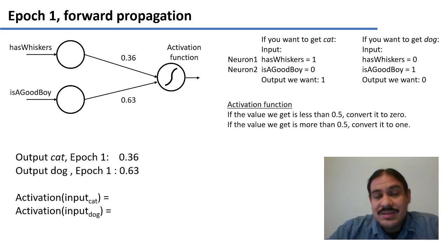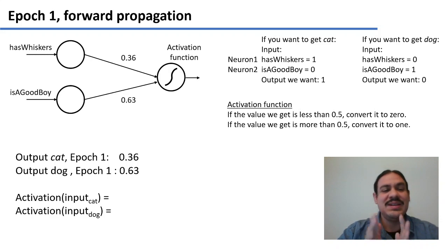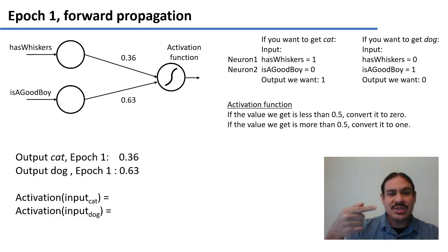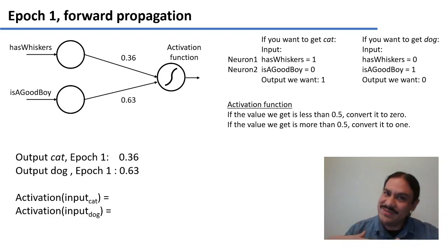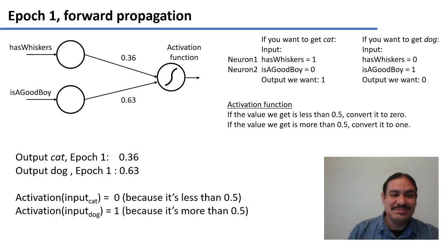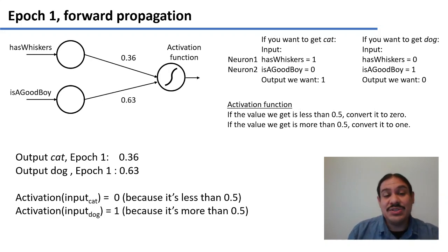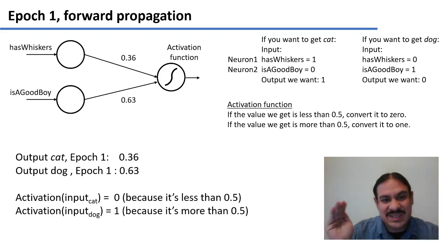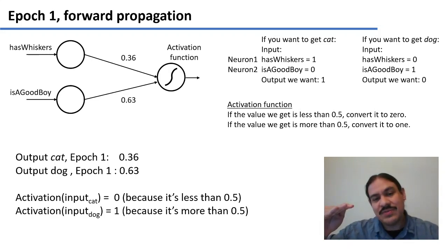That's the value you got. Then we have our activation function, which is rounding to the nearest integer. What is going to be the activation for cat and for dog? Cat gives an activation of 0 because 0.36 is less than 0.5, so 0 is the nearest integer. Dog gives an activation of 1 because the value from the input layer to the output layer is 0.63, and when you pass 0.63 to the activation function, you get a 1.